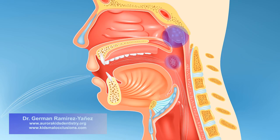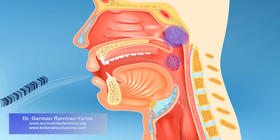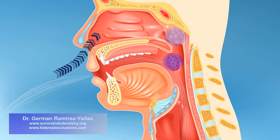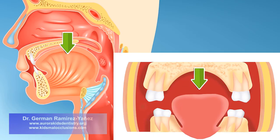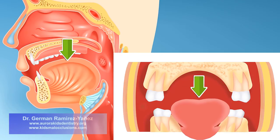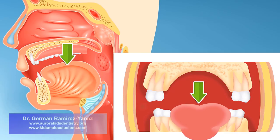As a consequence, that lymphoid tissue overgrows, occupying a large volume of your throat. That makes nasal breathing more difficult, and you develop a habit of breathing through your mouth. In order to breathe through your mouth, your lower jaw has to come down, and your tongue has to rest on the floor of your mouth.